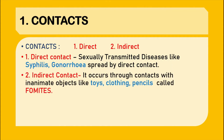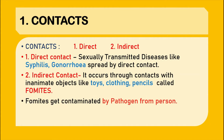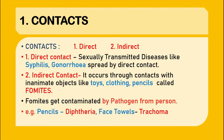The second mode is indirect contact. It occurs through contact with inanimate objects like toys, clothing, and pencils — these are termed as fomites. These inanimate objects get contaminated by the pathogen from a person suffering from the infection, and if the same object is utilized by another person, like pencils or face towels, that can transmit the infection. For example, a pencil can transmit diphtheria among children, and a face towel used first by an infected person and then by a normal person can transmit trachoma — that is referred to as indirect contact.